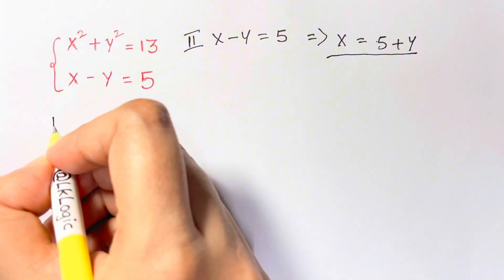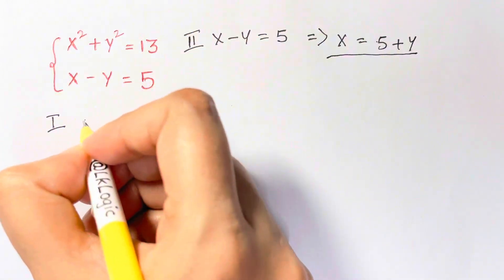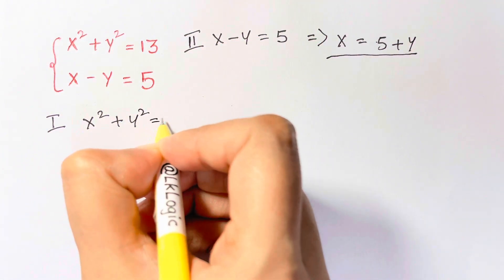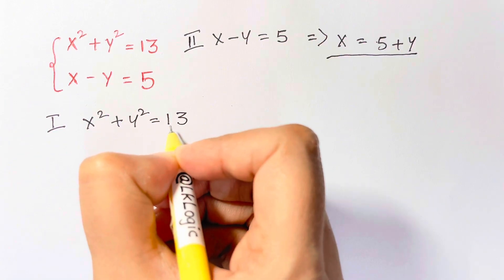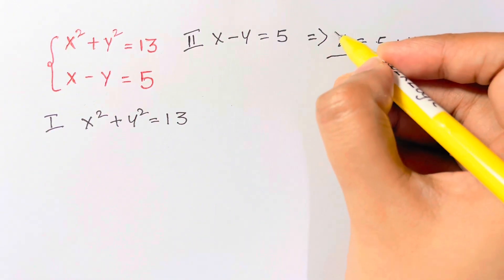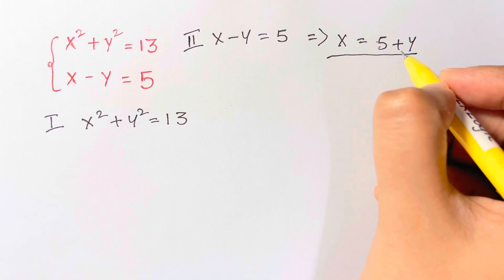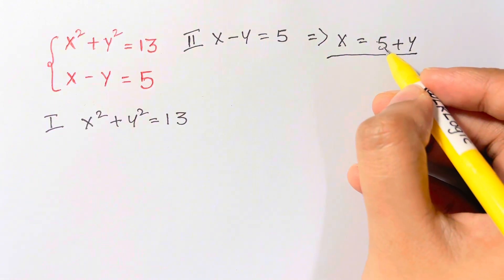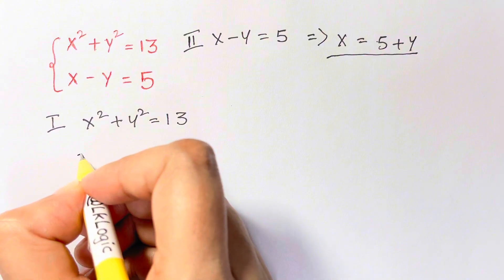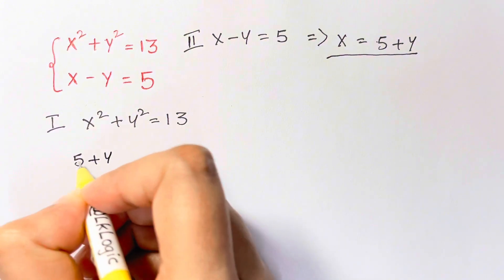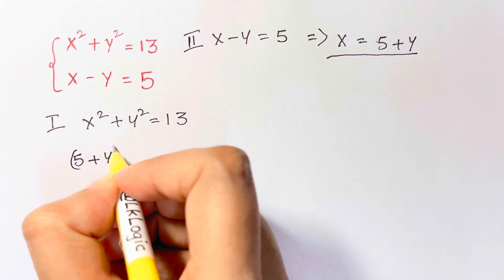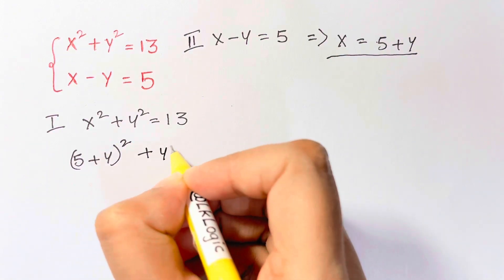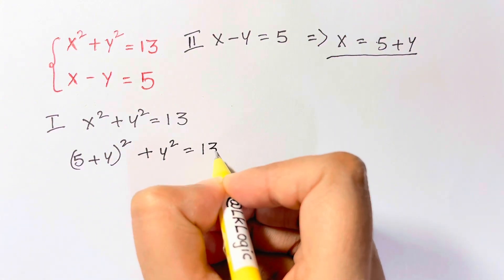Now from equation 1, what do we have? x squared plus y squared is equal to 13. What I'm going to do is substitute the value of x in this. So I have x is equal to 5 plus y. Put it here: (5 plus y) squared, plus y squared is equal to 13.